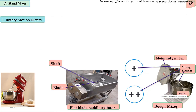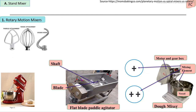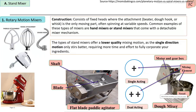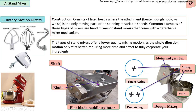The first equipment is the rotary motion mixer. The mixing elements are mostly paddles or hook-type agitators. The mixing element rotates on its own axis at a fixed position. The rotary motion mixer may be single acting, with one mixing element; dual acting, with two elements rotating in opposite directions; or multiple acting, such as flat multiple paddle agitators.